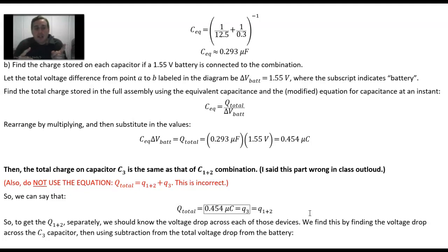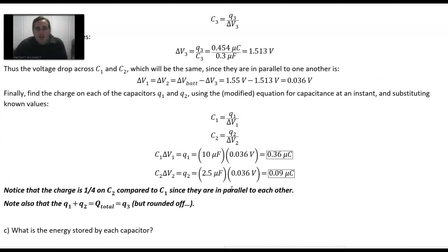In fact, another way to say this is capacitor 1 and 2 will share the charge of 0.454 microcoulombs unequally, depending upon the size of those capacitances. So we have to find the voltage drop across capacitor 3 and then use subtraction to find the voltage drop for each of those capacitors.